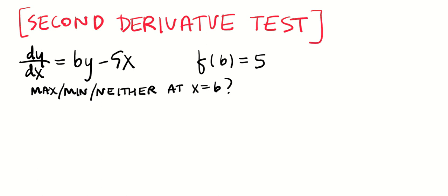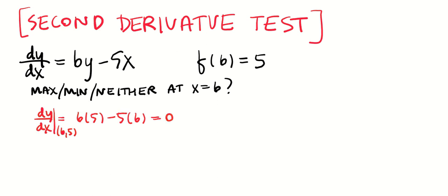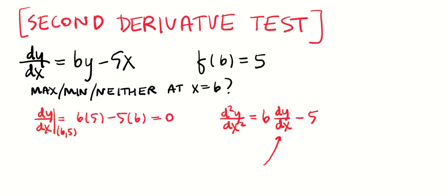For a specific problem, starting at the point (6, 5): dy/dx at (6, 5) equals 6y minus 5x, and I'm going to show that equals 0. Now I need to take the second derivative implicitly. The derivative of 6y with respect to x is 6 dy/dx, and the derivative of 5x is 5, so d²y/dx² equals 6 dy/dx minus 5. If the question asked for the second derivative in terms of x and y only, we'd substitute, but this question asks whether there's a maximum or minimum at x equals 6.